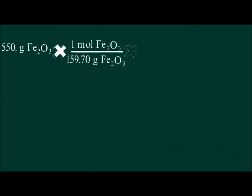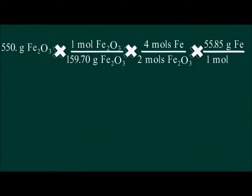Now that we have all the information required, we can set the problem up using unit analysis. We can find the theoretical yield and limiting reagent in one step. We use the stoichiometric relationship between the reactants and the desired product, in this case iron, to calculate the amount of product that can be produced from each reactant.